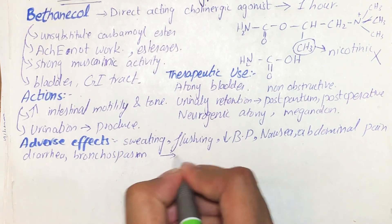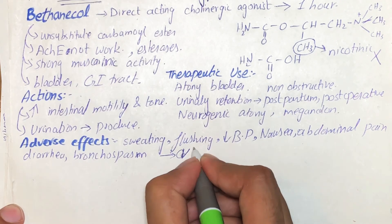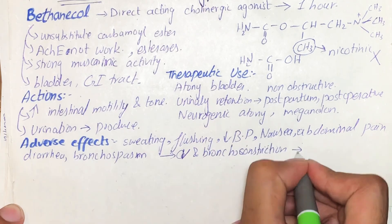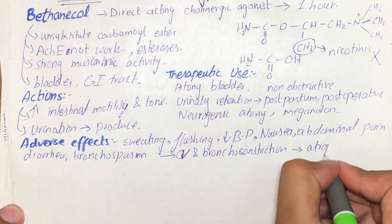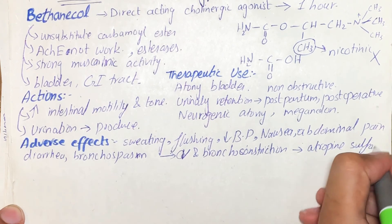Severe cardiovascular and bronchoconstrictor responses to this agent can be overcome by administration of atropine sulfate. This was all about it. If you have any questions let me know in the comment section below, and thank you for watching.